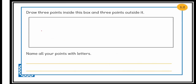Here is one more activity. We cannot draw children — we have to mark. Mark three points inside this box and three points outside it, and name all your points only with capital letters.